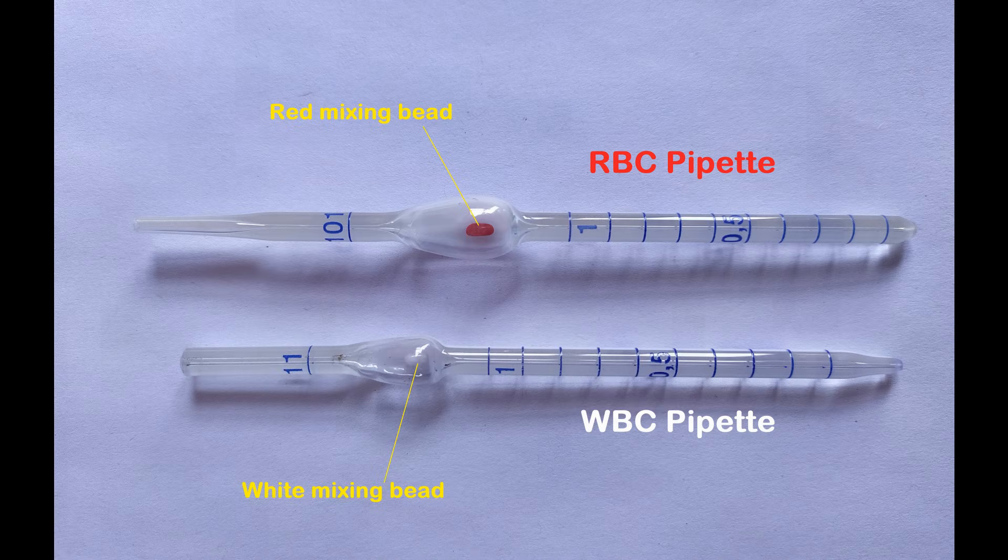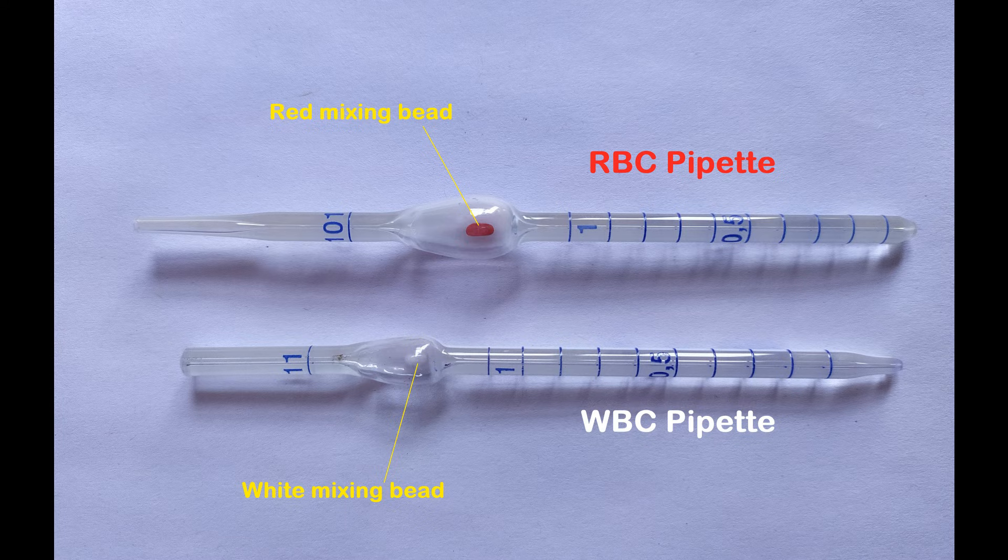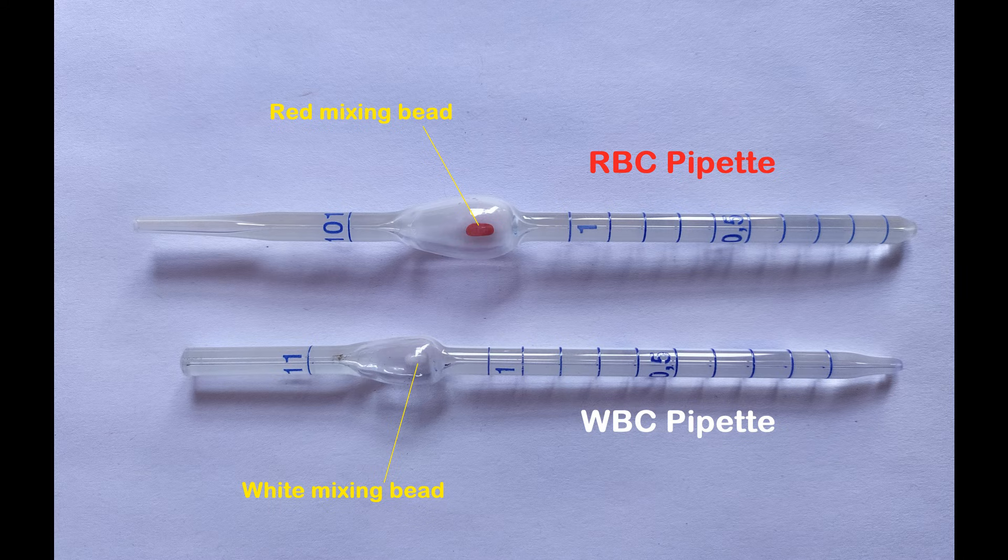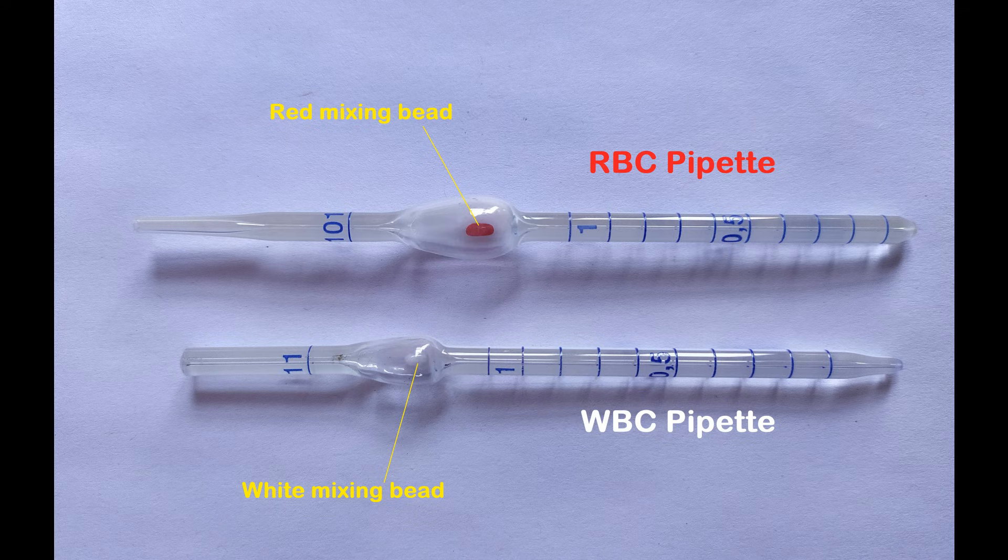The RBC pipette has a tiny red mixing bead inside the bulb. It has three graduations. This pipette is used for counting RBCs in a blood sample.